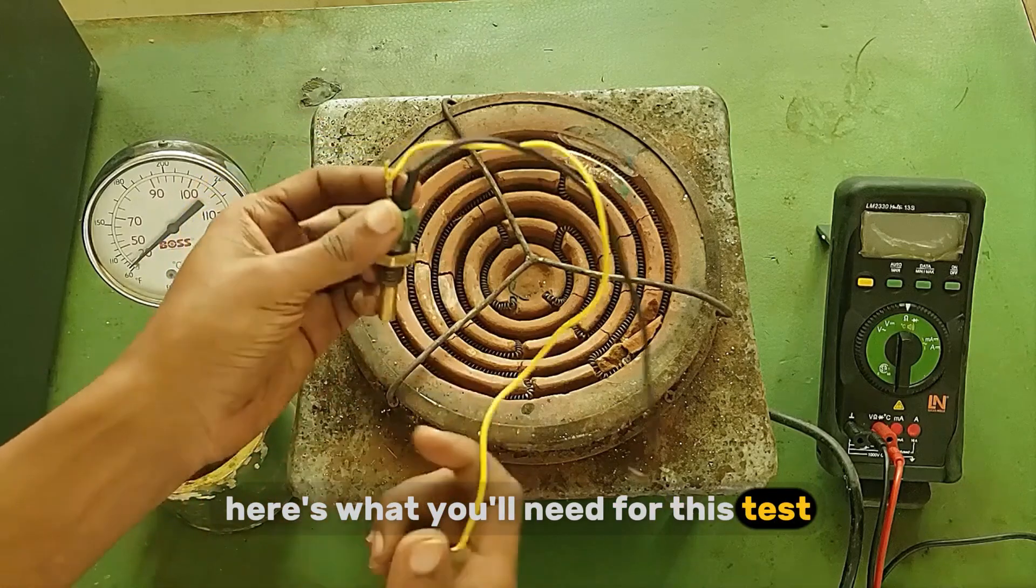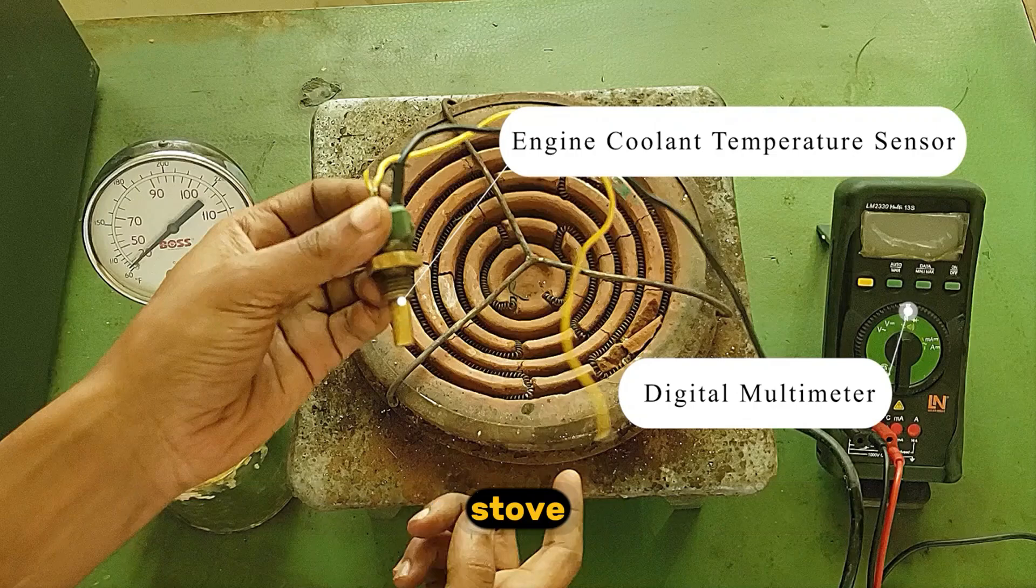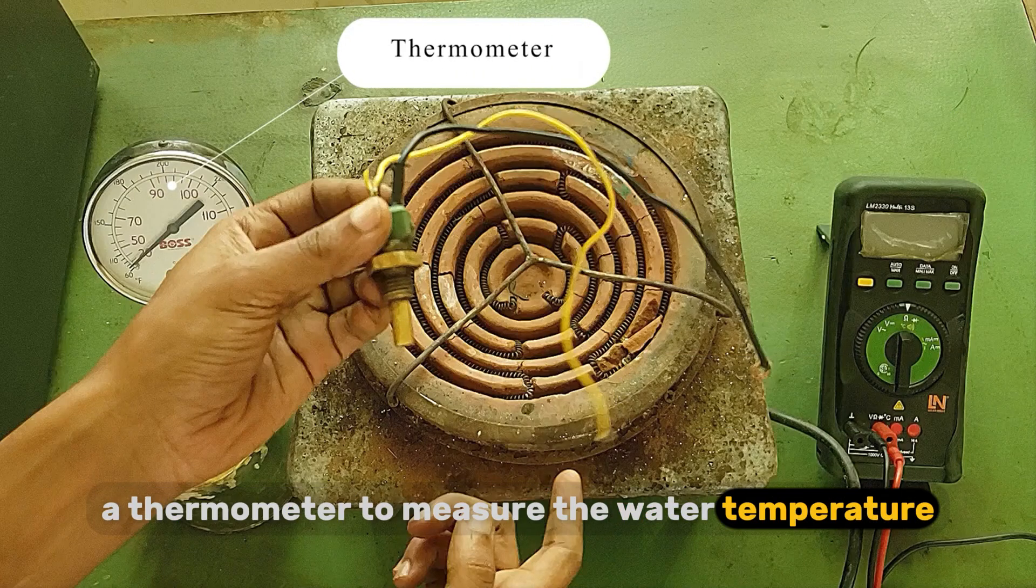Here's what you'll need for this test: a coolant temperature sensor, a digital multimeter, a pot of boiling water and stove, and finally, a thermometer to measure the water temperature first.